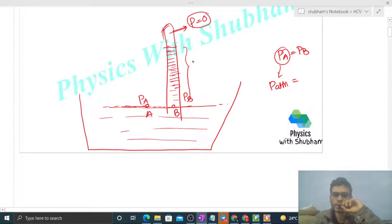So point B pressure will be rho into g into h. Rho is the density of this liquid, g is acceleration due to gravity, and h is the height of liquid in this tube, right?